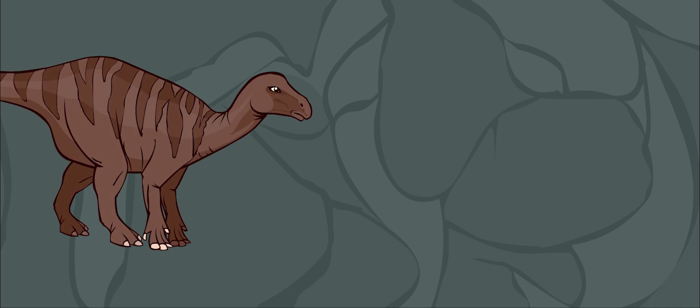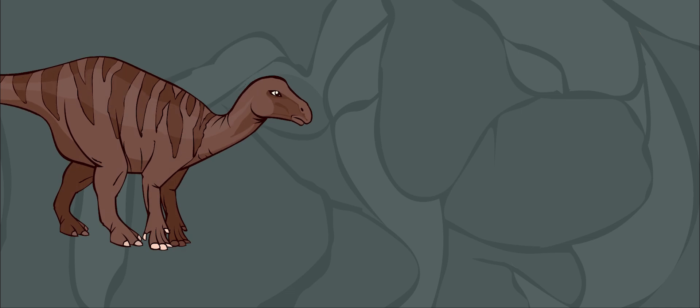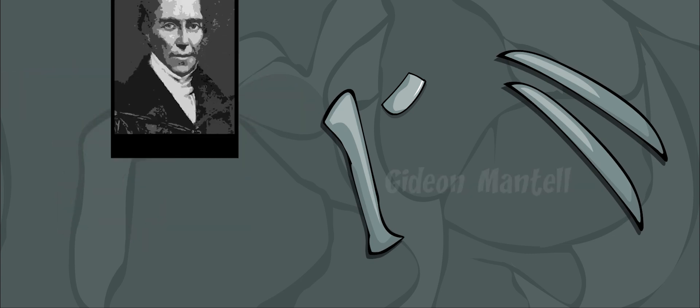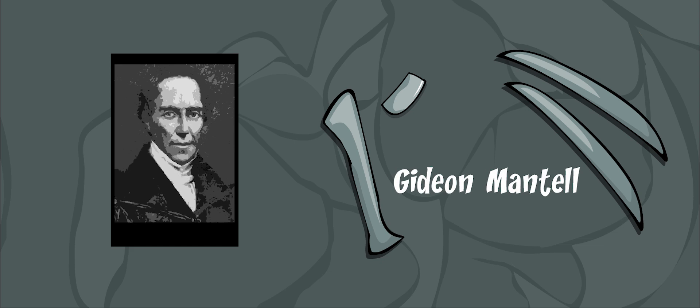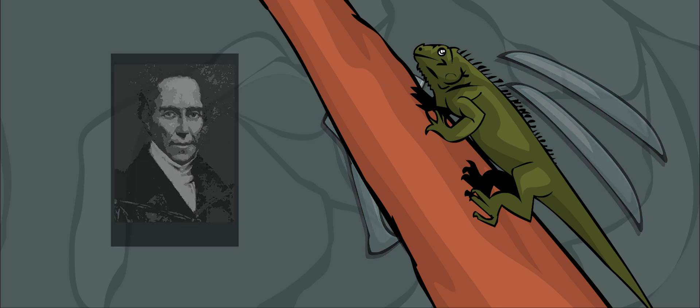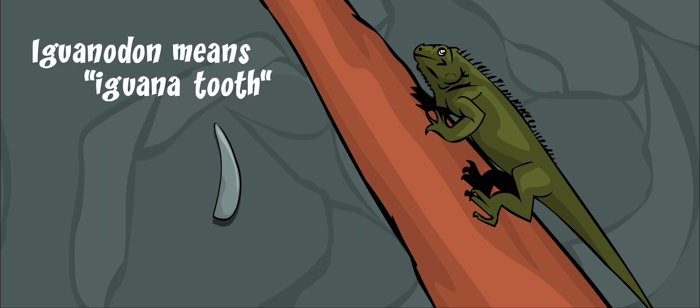Iguanodon fossils are some of the first dinosaur bones ever found. A tooth and a few bones were found by a British scientist named Gideon Mantell in the 1820s. These first fossils looked like the teeth of a modern iguana. That is how Iguanodon got its name, which means iguana tooth.